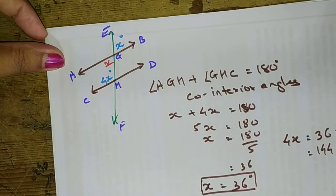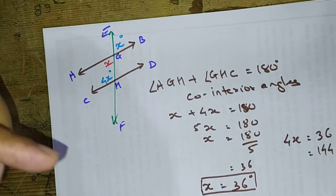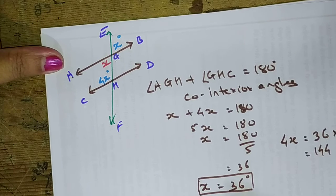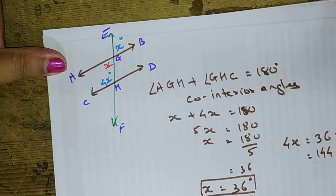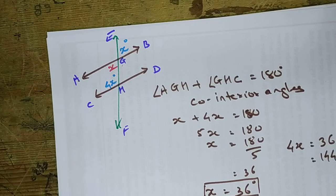So we got the value for X and also for 4X. We got the answer of 4X also. By this we can get or we can write the measures of all the angles here.